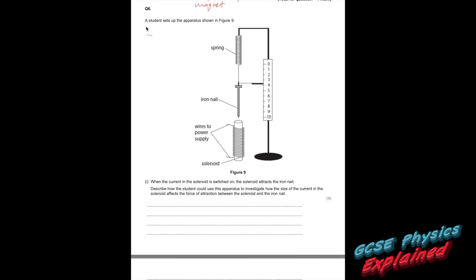Question 6. A student sets up the apparatus shown in figure 9. When the current in the solenoid, now that's just a posh word for a coil of wire, is switched on, the solenoid attracts the iron nail.